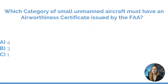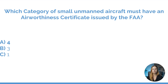Which category of small unmanned aircraft must have an airworthiness certificate issued by the FAA? This is a relatively new regulation and the answer is Category 4. All Category 4 aircraft must have an airworthiness certificate issued by the FAA.